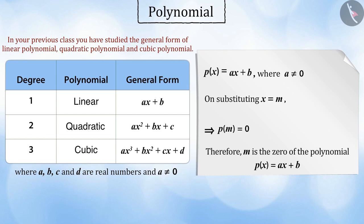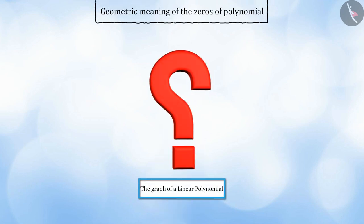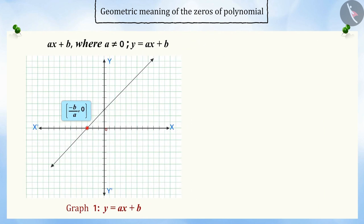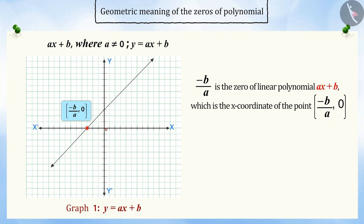Now let us understand the geometrical meaning of zeros of polynomial. How will the graph of a linear polynomial look like? For a linear polynomial ax plus b, the graph y equal to ax plus b is denoted by a straight line, which intersects the x-axis at the point minus b by a, zero. This gives us the conclusion that the linear polynomial ax plus b has one zero, minus b by a, which is the x-coordinate of the point minus b by a, zero.